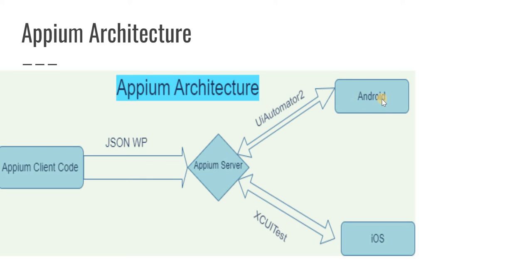After your test cases are executed and performed on the virtual or physical device, the response comes back the same way — through UI Automator or the respective test framework back to the Appium server. The Appium server then sends back the response in JSON format to your client code, and your IDE — for example Eclipse — will show the response and outcome there.